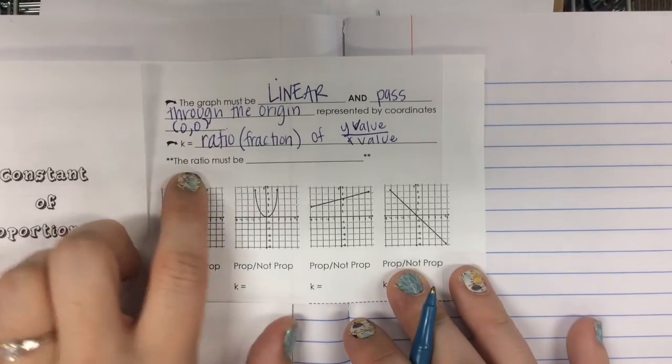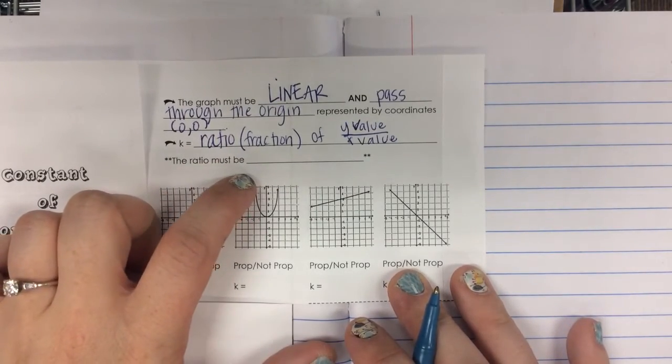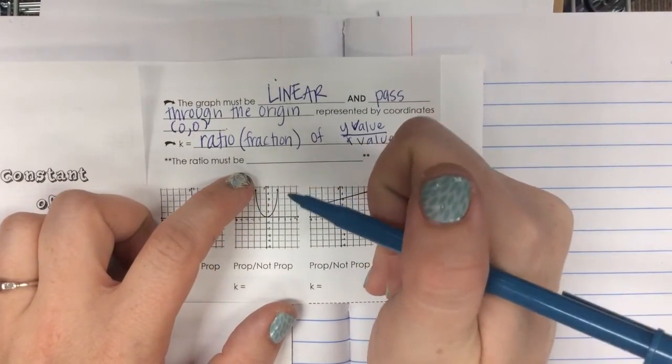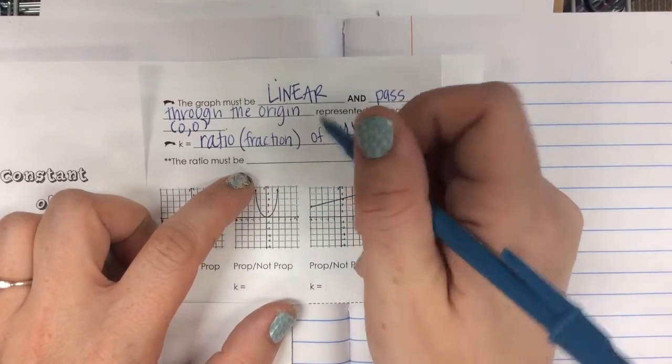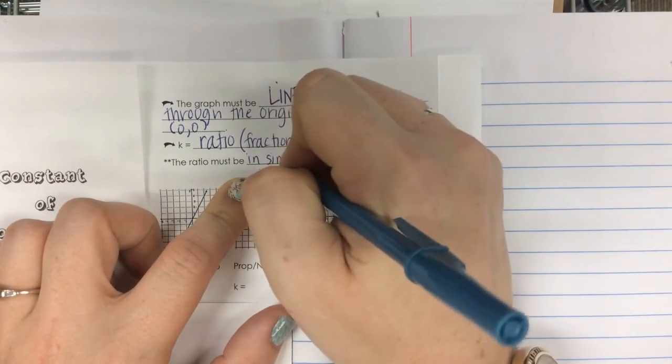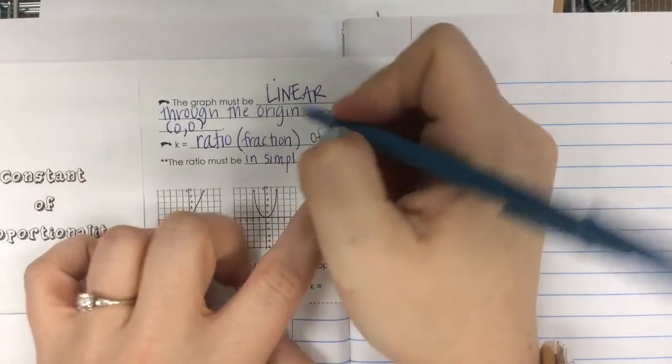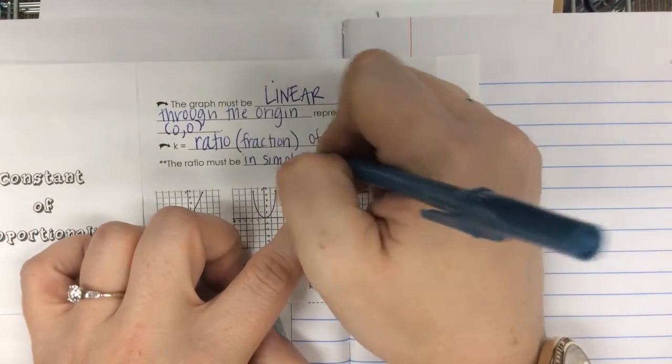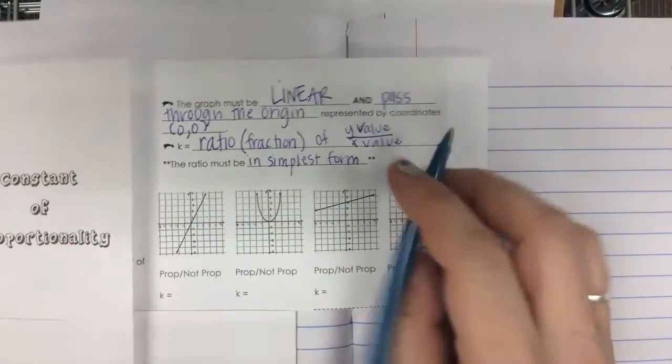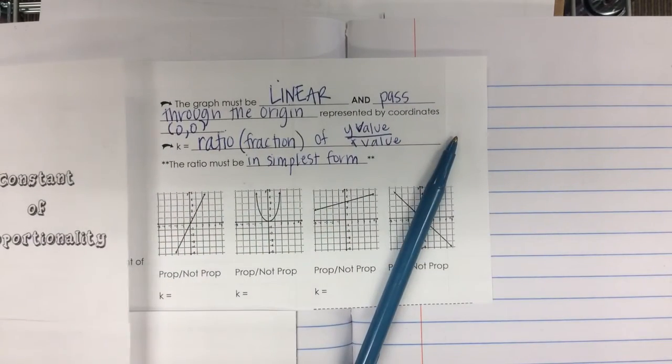And the ratio must be what? Ratio must be proportional. That's proportional to the other one. So if it's proportional, meaning they're all the same, which one are we going to pick? Simplest form. Simplest form. Must be in simplest form.